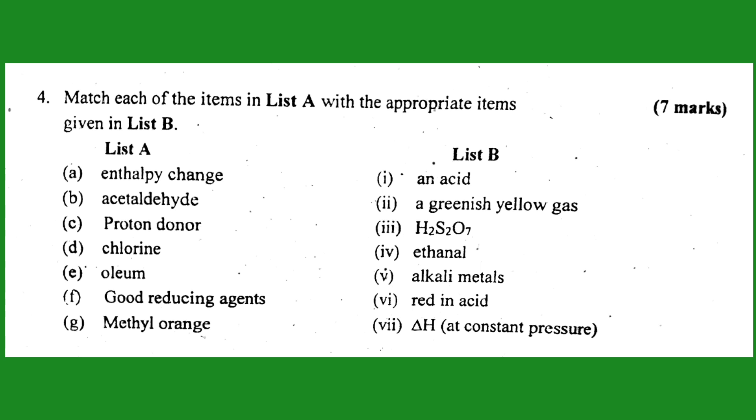A. Delta H - at constant pressure. B. Acetaldehyde - ethanal. C. Proton donor - N-acid. D. Chlorine - greenish yellow gas. E. Oleum - H₂S₂O₇. F. Good reducing agents - alkali metals. G. Methyl orange - red in acid.